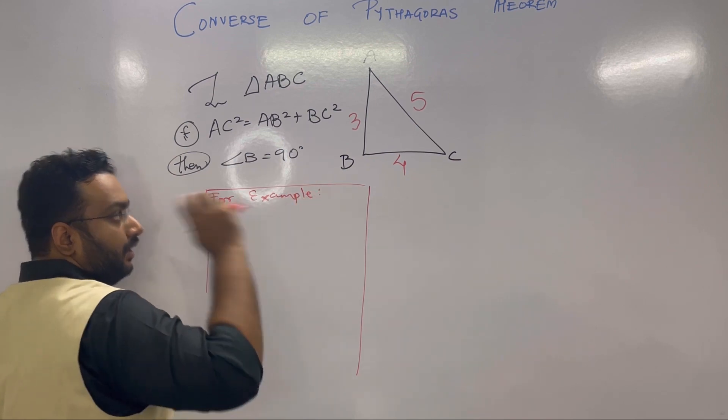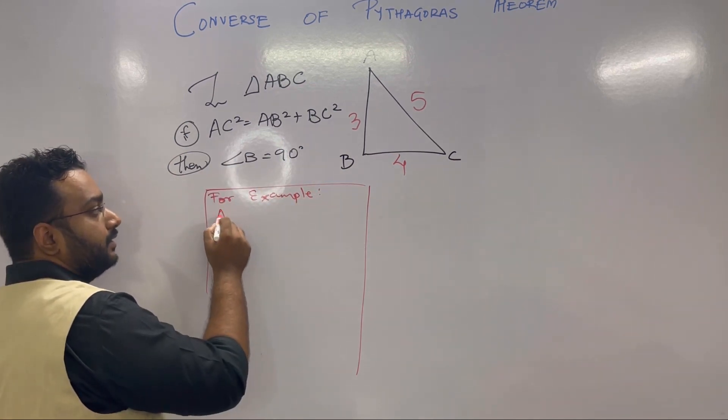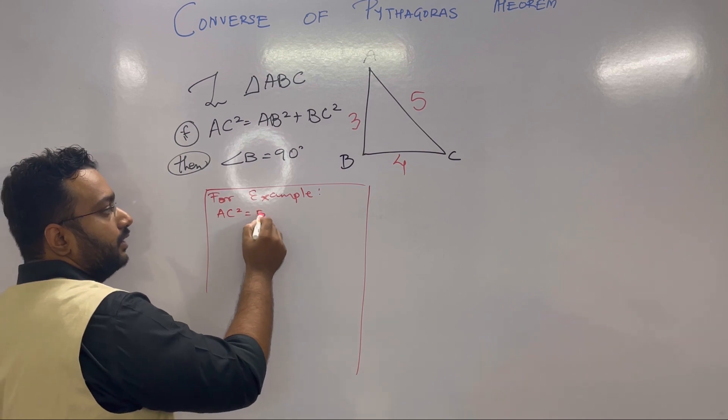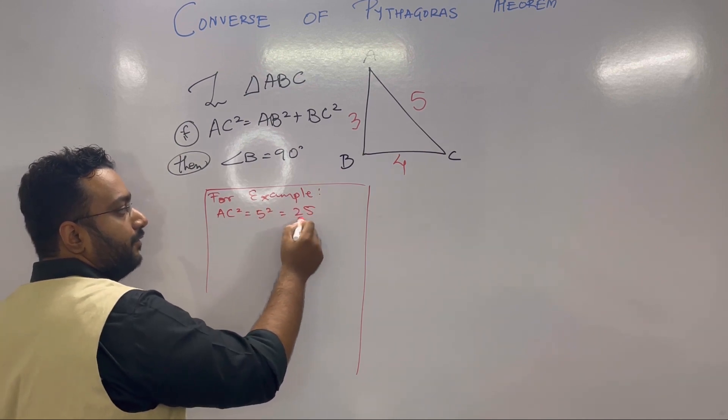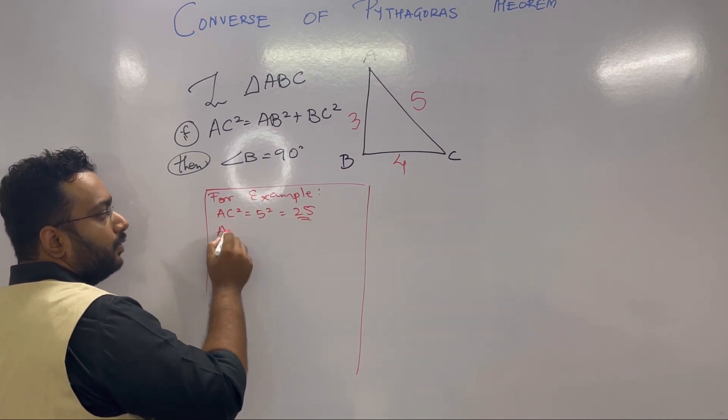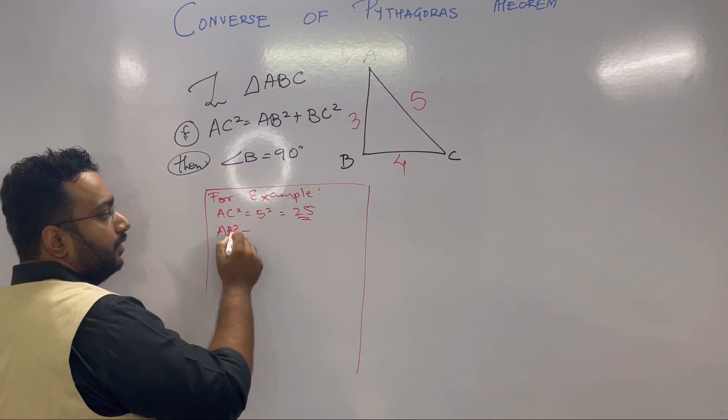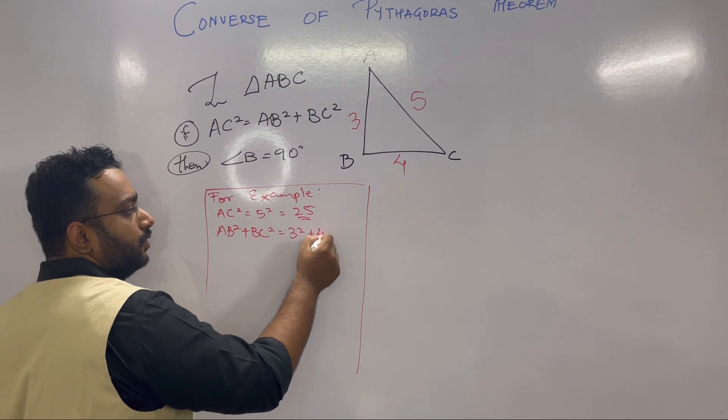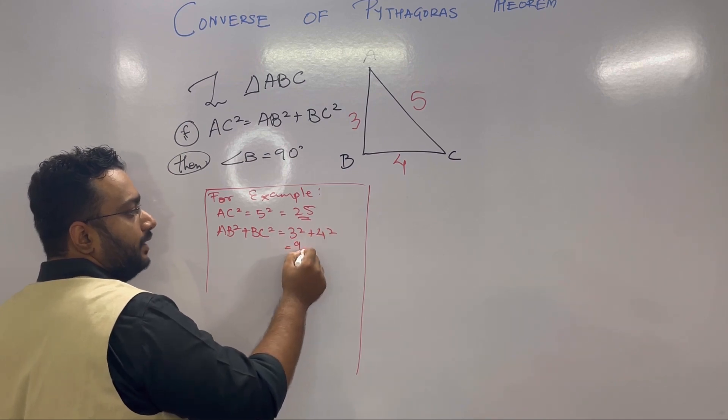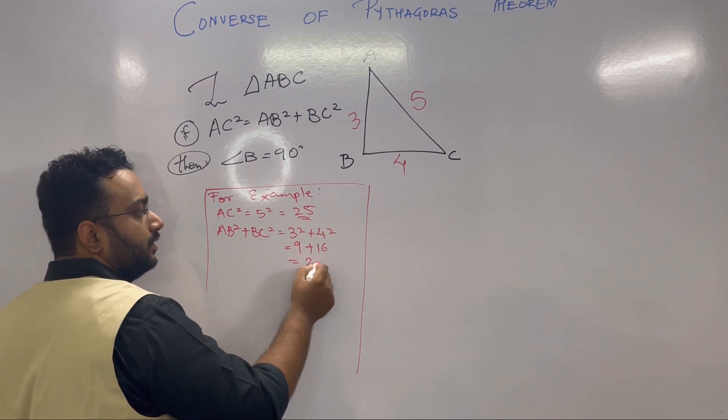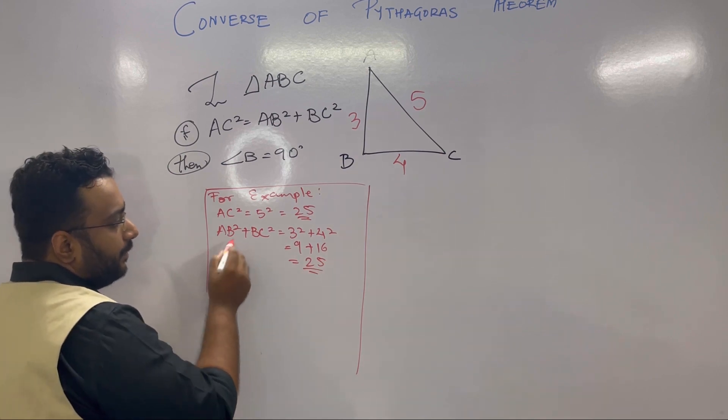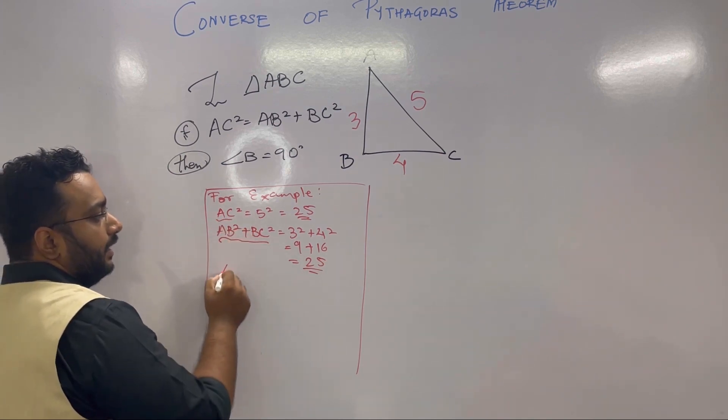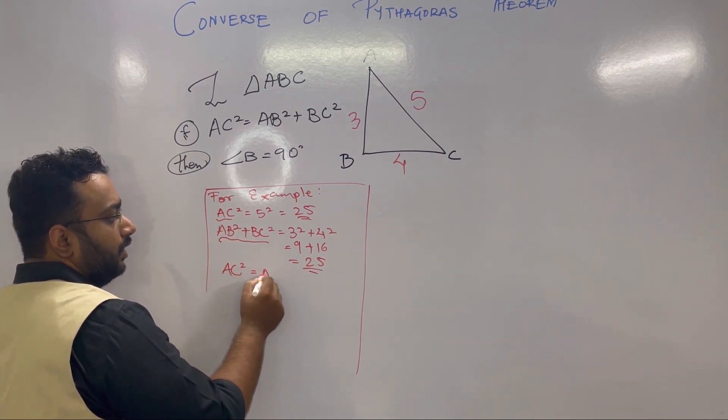square, which is 25. Now the remaining two sides squared in addition: AB square plus BC square equals 3 square plus 4 square. 3 squared is 9, 4 squared is 16, and 16 plus 9 is 25. So we can say that AC square equals AB square plus BC square.